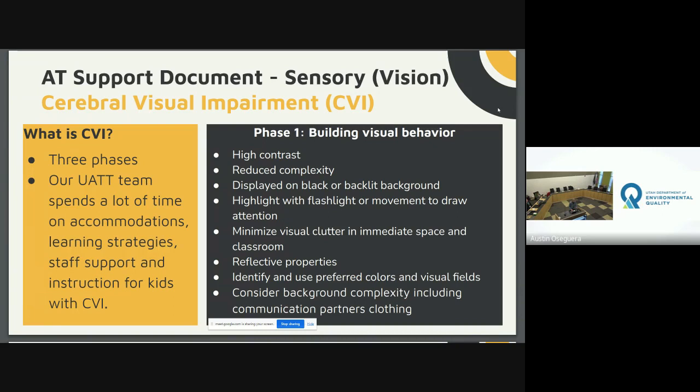According to the National Eye Institute, CVI is the leading cause of vision loss among kids in the United States. There is a test called the Christine Roman-Lansky Rating Scale. CVI is rated on a scale from zero to ten — zero means no functional vision, ten means all CVI characteristics have resolved. At every level there are different visual characteristics commonly seen, and within that scale she's broken it down into three phases.